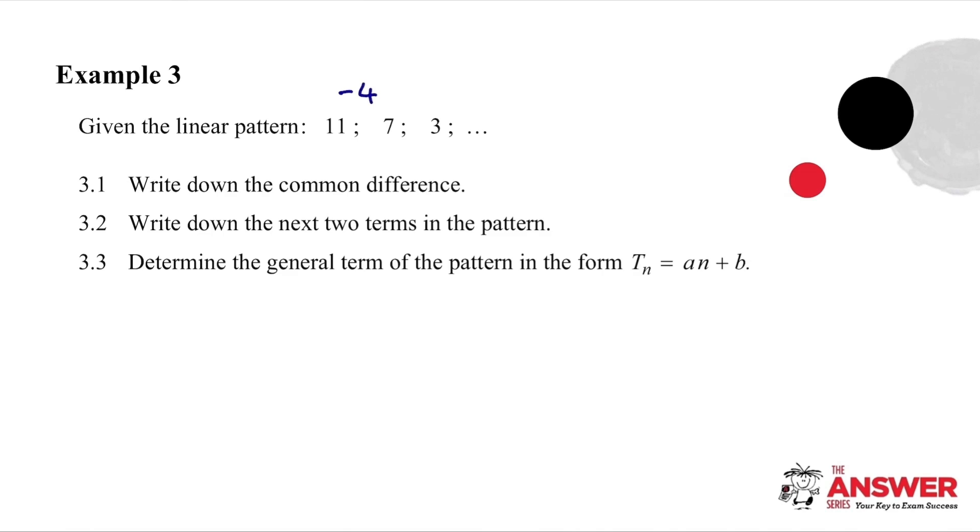When the numbers decrease, it's very important that you attach a negative to the difference, otherwise it doesn't work. So the common difference now is negative four. Each term drops off by four. So the next term will be negative one, then it will drop off by four, and the next term will be negative five. So we can continue our pattern like that.